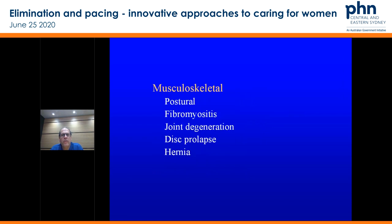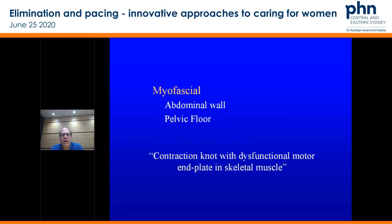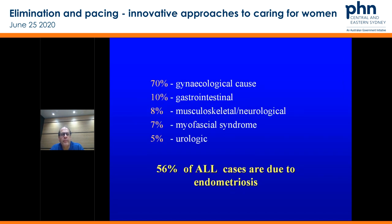Urological causes, musculoskeletal, myofascial, abdominal wall — the contraction with dysfunctional motor end plates. We see that a little bit and do use trigger point injections for that group of patients — it's very specific and you can localise it. So 70% of pain relates to a gynae cause. 56% of all cases are due to endometriosis — it's just about thinking about it.